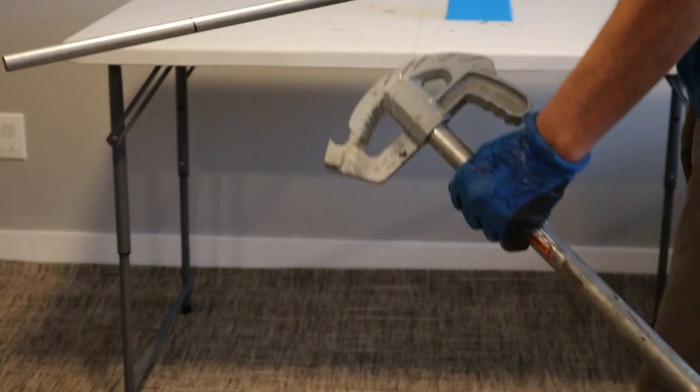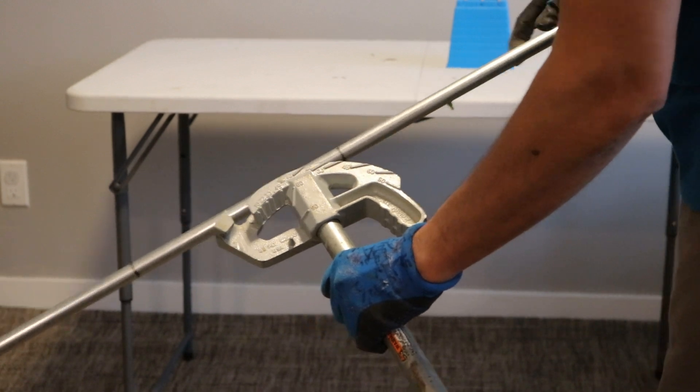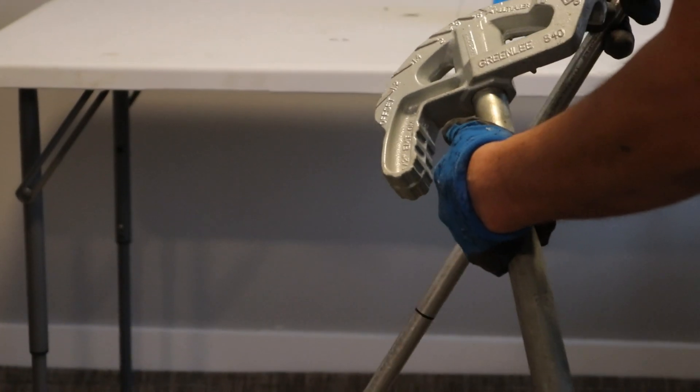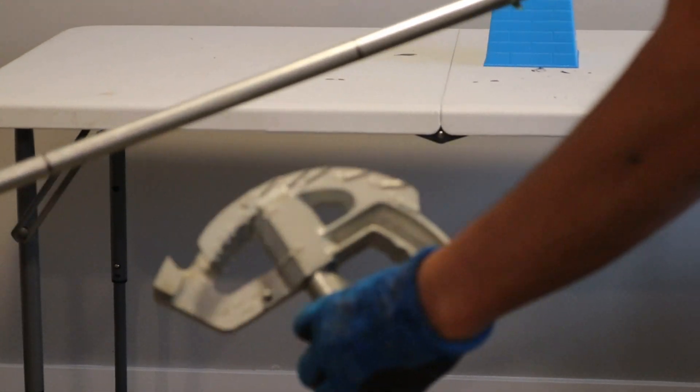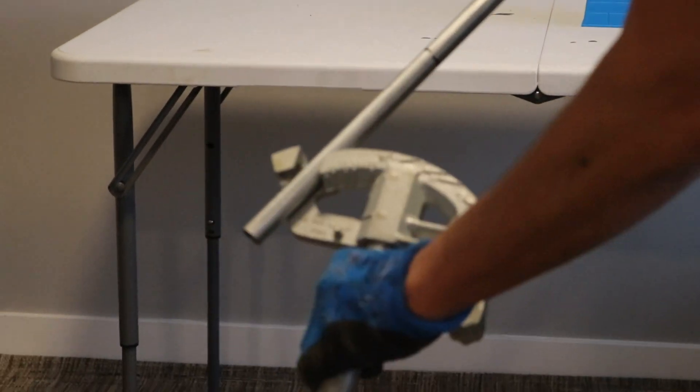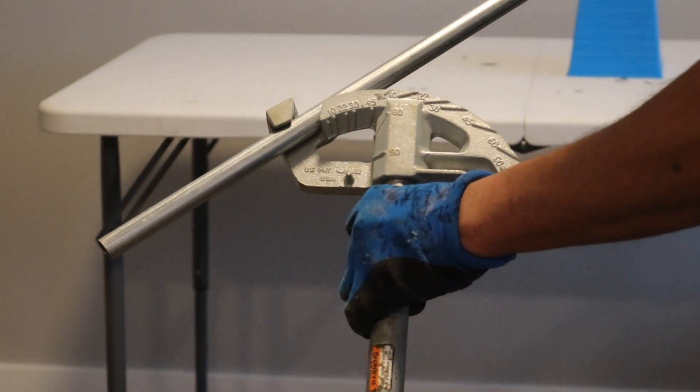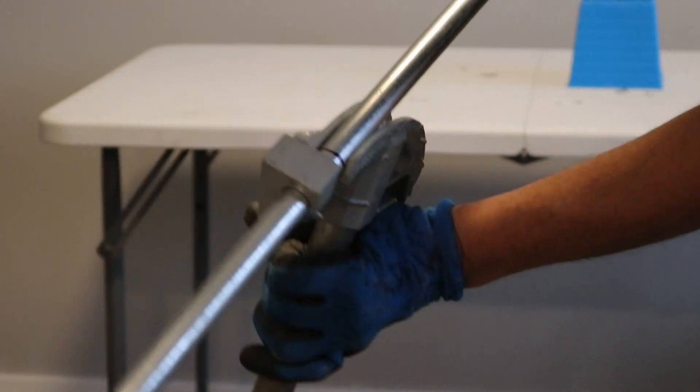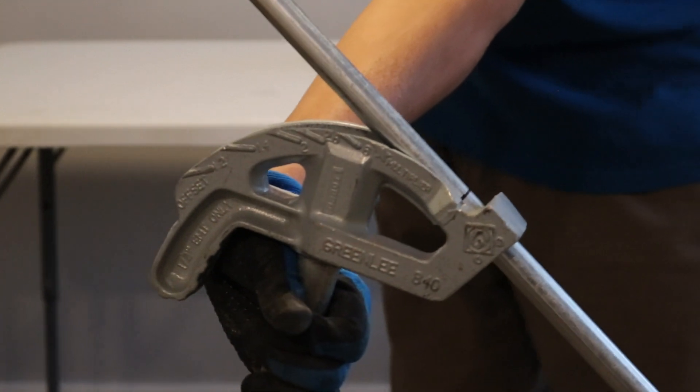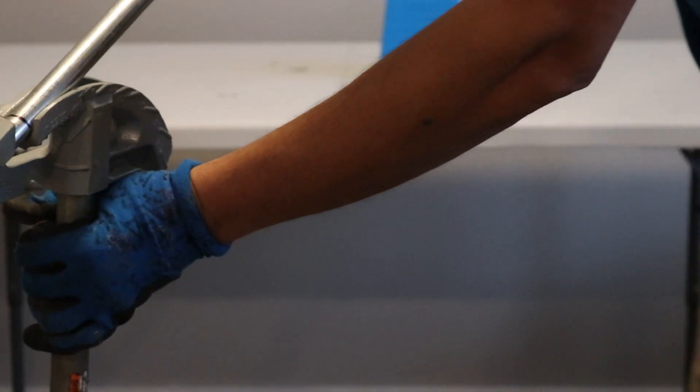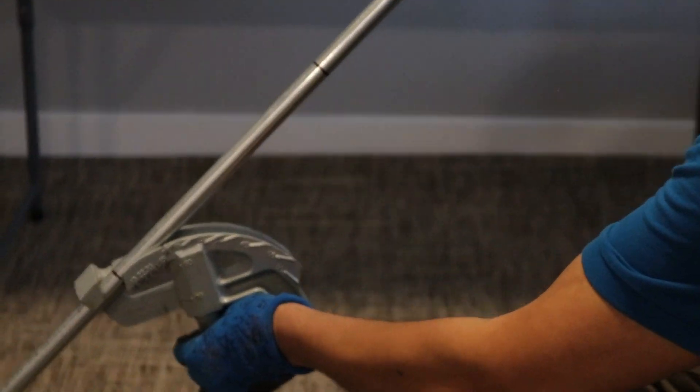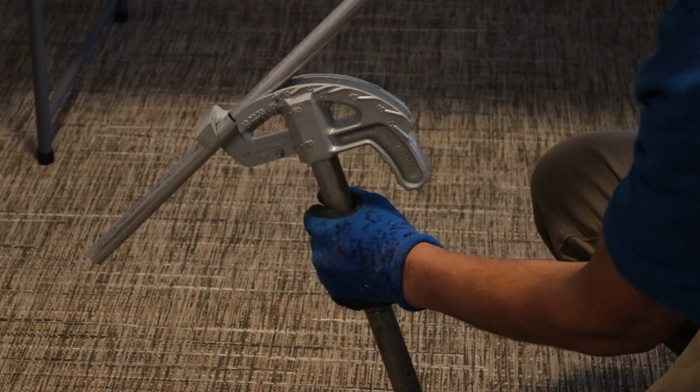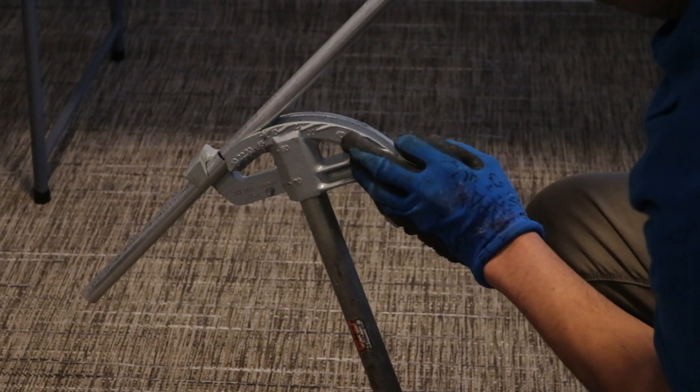Alright, I got my bender now. My bender has an arrow mark. So that's the arrow. That means my first mark I'm gonna put right on the arrow, which is right here. You can see that.